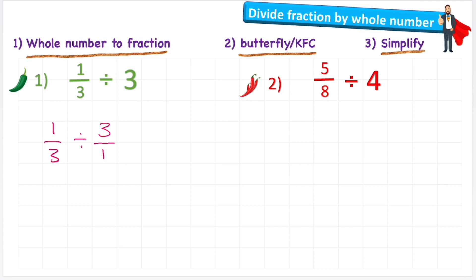Now I've got this looking like this, I can begin to do step two. And step two says either the butterfly or the KFC. So let's have a look at the butterfly first of all. Butterfly says that we're going to be multiplying the numerator, which is the top number, by the denominator of the second fraction, and use that as our numerator.